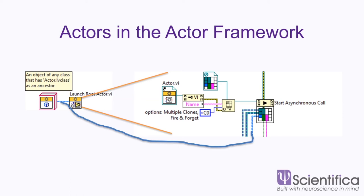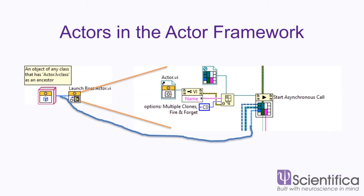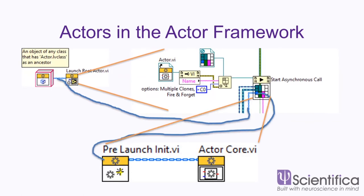When we launch a root actor using that VI reference, in the background we are getting a static reference to actor.vi, getting a VI reference to it, and then starting an asynchronous call. We pass this actor object — which could be a data logger, user interface, DMM, or anything — into a VI called Pre-Launch Init. This is one of those VIs which we can override and append functionality. The data logger might want to create some references to files, set up directories, and so on in Pre-Launch Init. It's like your startup VI.